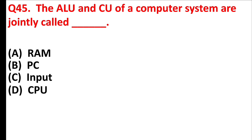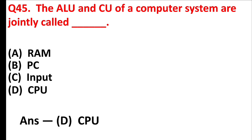The ALU and CU of a computer system are jointly called blank — Answer is Option D: CPU.